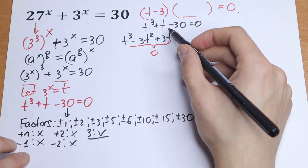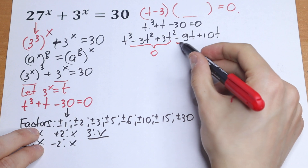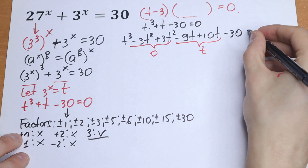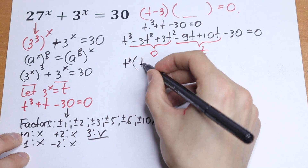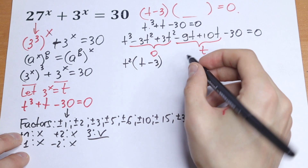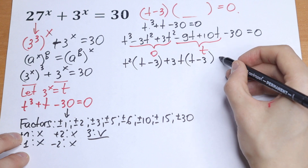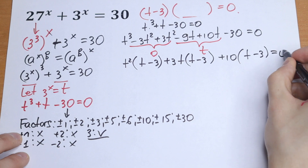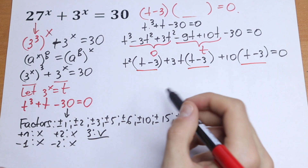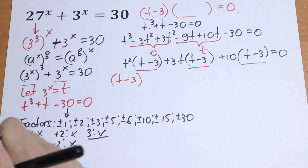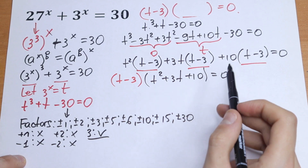We also need t minus 3 to factor from the t term, so we write minus 9t plus 10t — this still equals t. Now: t cubed minus 3t squared can be factored as t squared times (t minus 3). Then 3t squared minus 9t factors as 3t times (t minus 3). And 10t minus 30 factors as 10 times (t minus 3) equals zero. So we factor out (t minus 3), giving (t minus 3)(t squared plus 3t plus 10) equals zero.